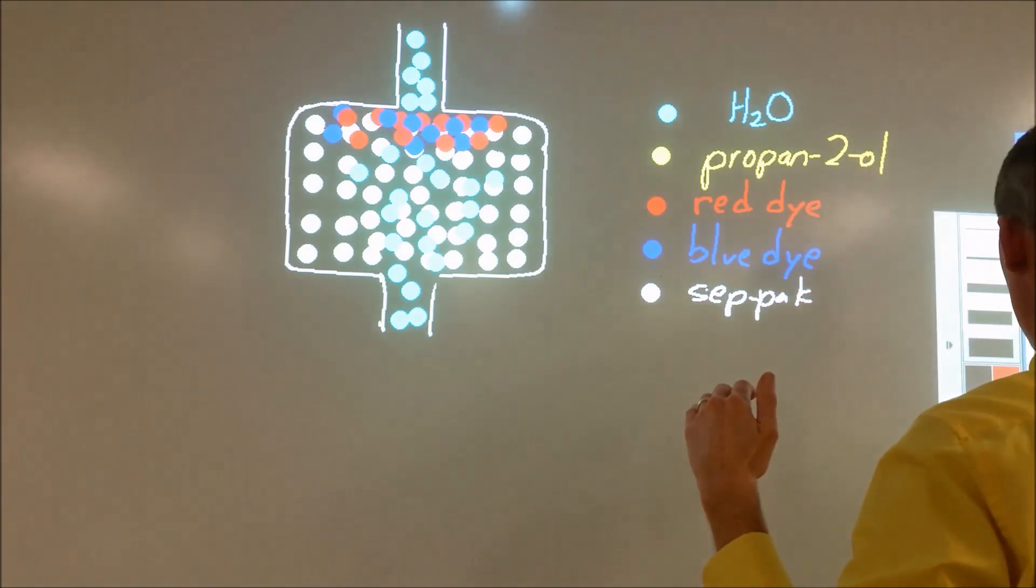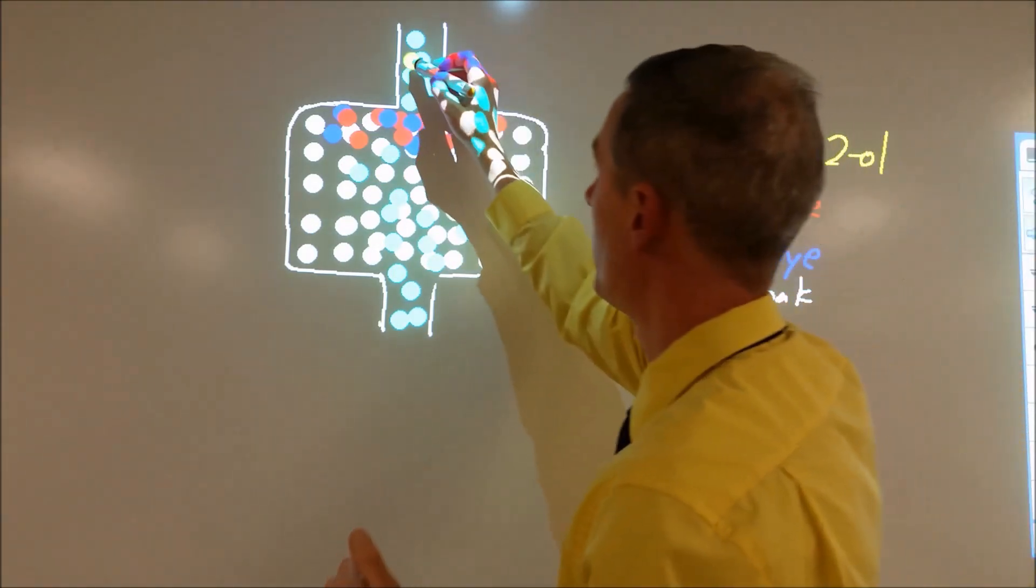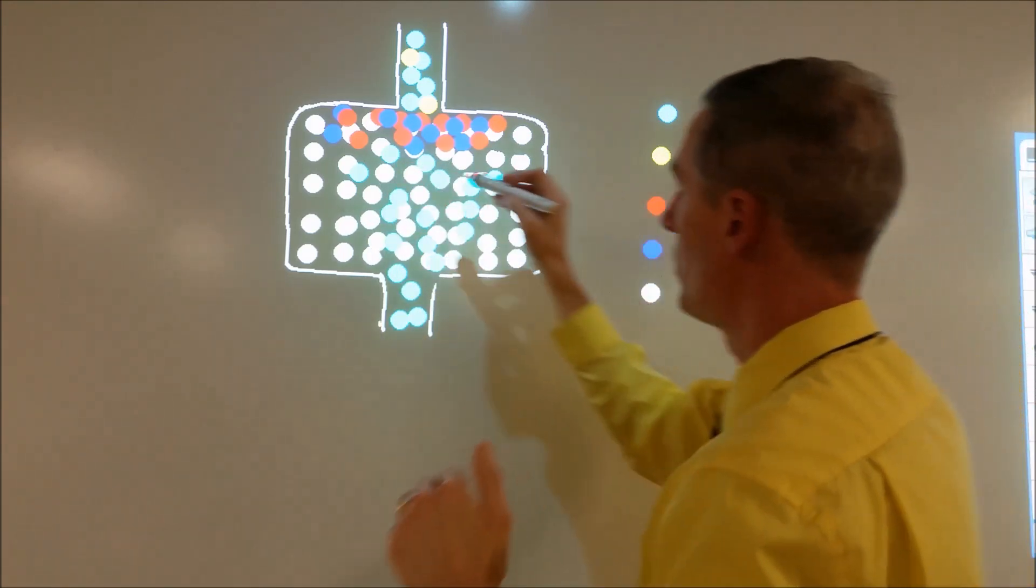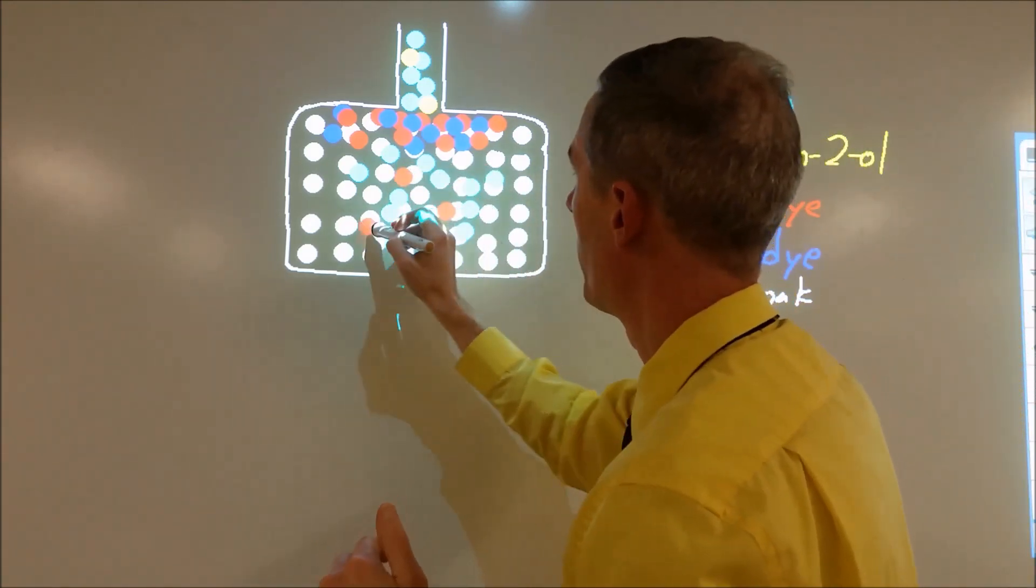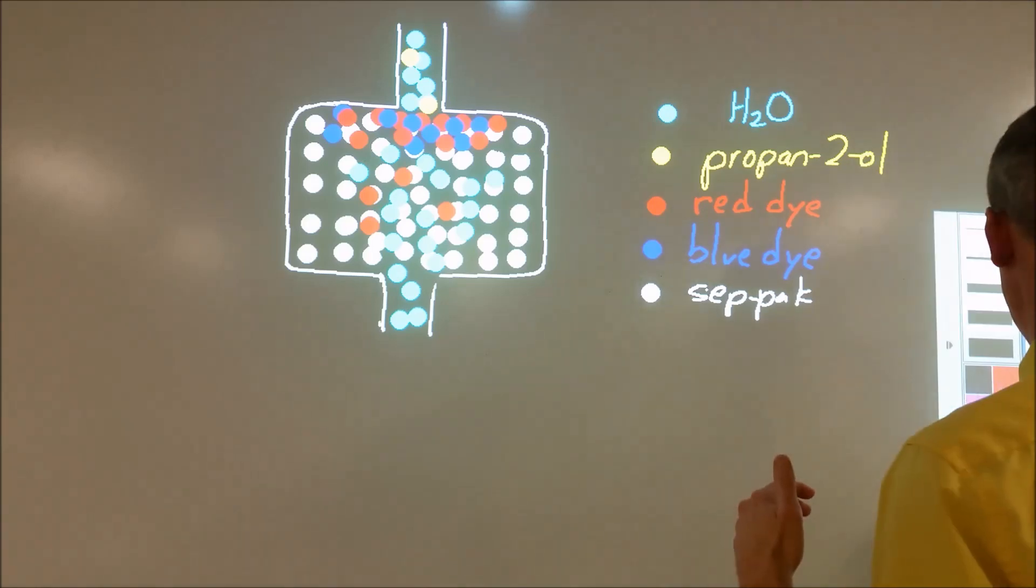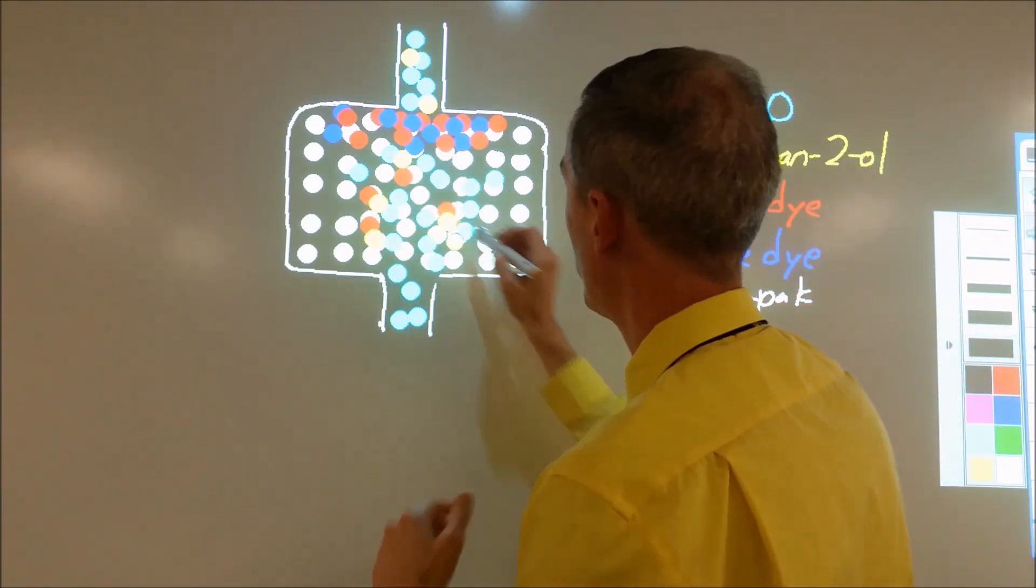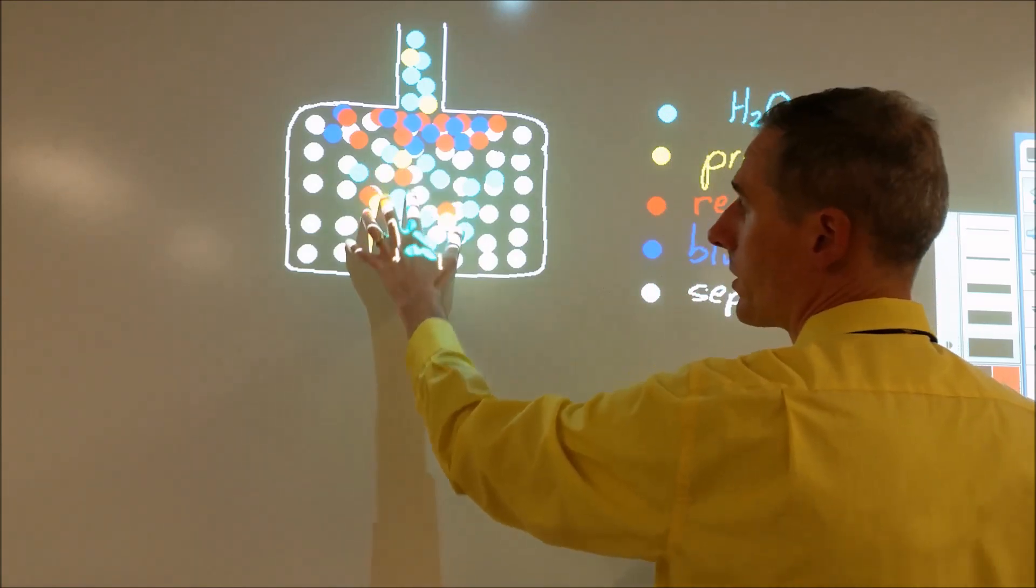But once we start to put in a little bit of the propan-2-ol, then we start to see that the red particles start to move down with them. What's happening is the yellow particles are pulling some of those red ones, where there's an interaction between those causing the red to move.